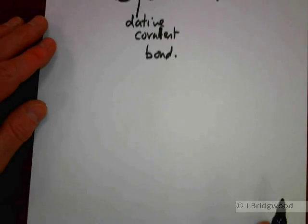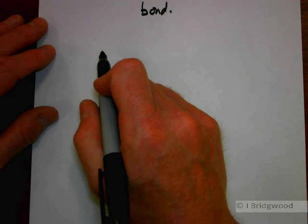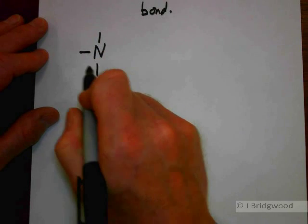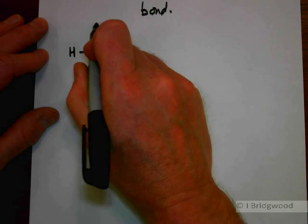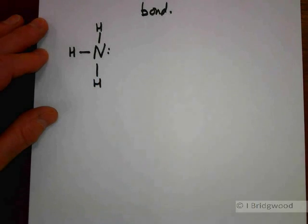Ammonia reacting with boron trifluoride. Ammonia, NH3, its Lewis structure showing all the covalent bonds is like that.